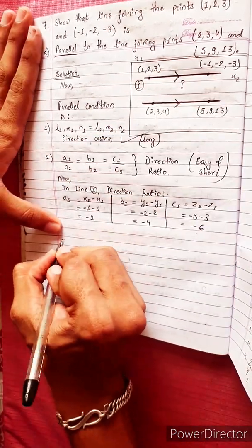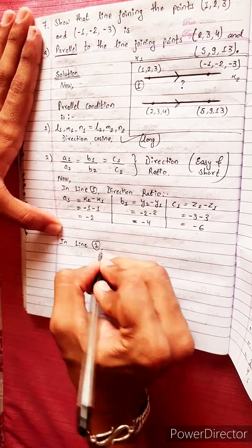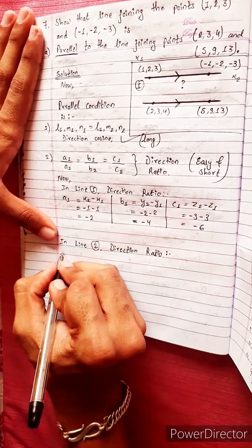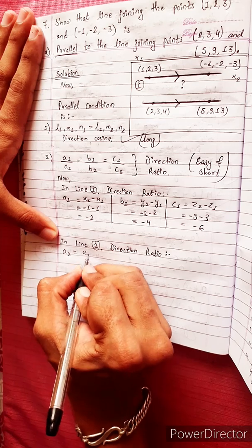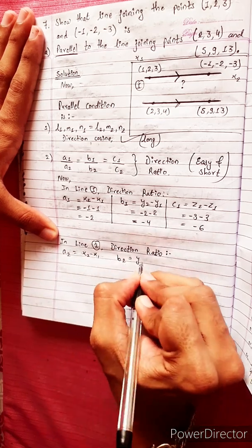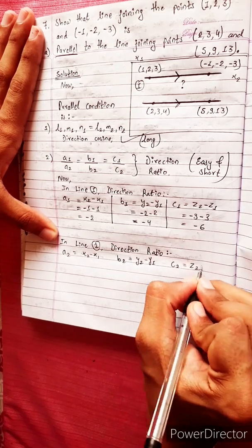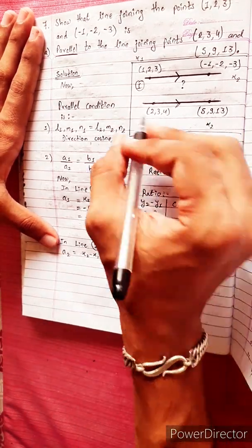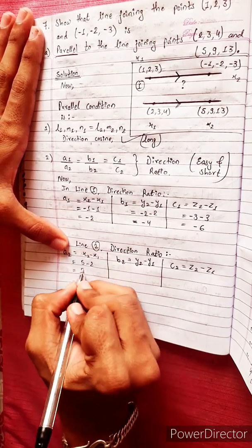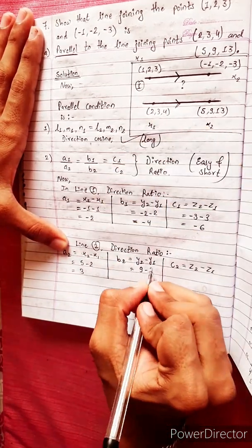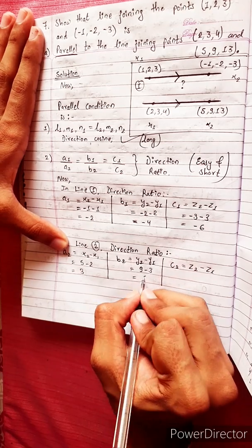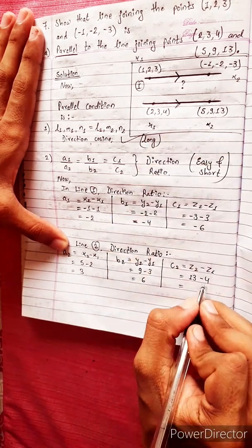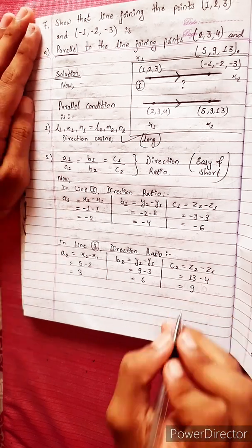For line 2, the direction ratios are: a2 = x2 - x1, b2 = y2 - y1, c2 = z2 - z1. Substituting: a2 = 5 - 2 = 3, b2 = 9 - 3 = 6, c2 = 13 - 4 = 9.